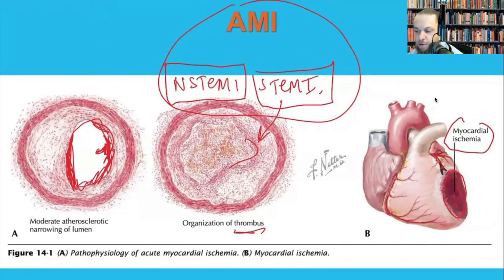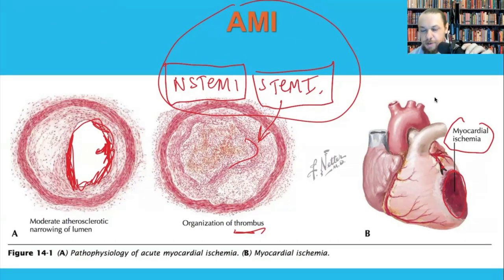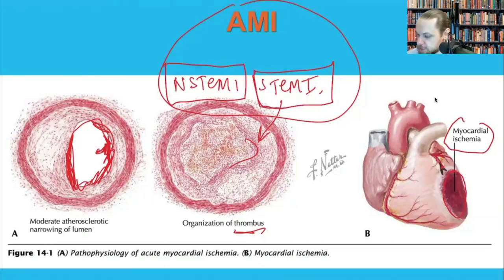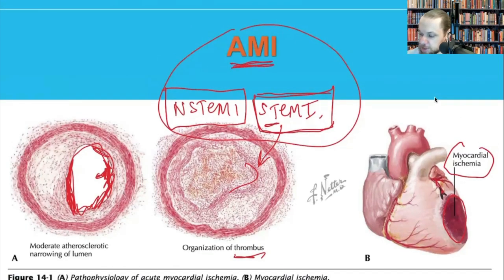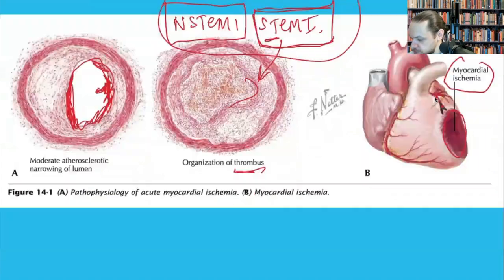It's important to understand these terms because when you call dispatch, they may say the STEMI center is on diversion or not accepting patients. That means a person having a heart attack who needs catheterization cannot be taken to that cath lab. The STEMI center is specifically for patients with ST segment elevation diagnosed via 12-lead EKG. If the STEMI center is on diversion, that may not be the best hospital to transport the patient to.